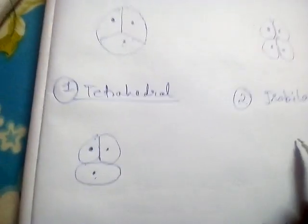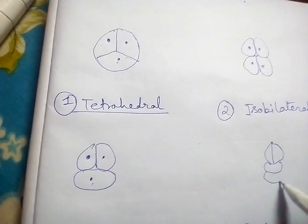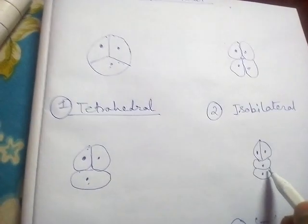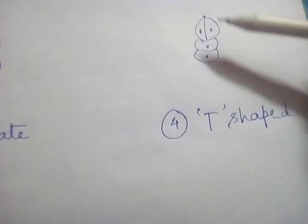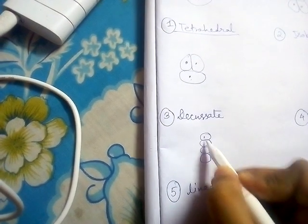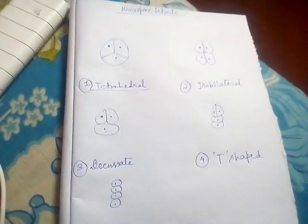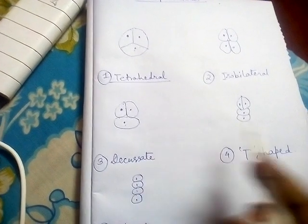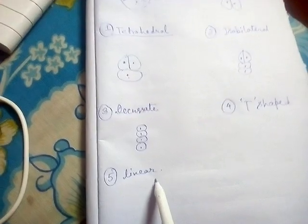The fourth type is T-shaped. In the case of the T-shaped tetrad, four microspores are arranged in a T configuration — first, second, third, and fourth. The fifth type is linear, where the four microspores are arranged in a straight line. So the five types of microspore tetrads are: tetrahedral, isobila teral, decasset, T-shaped, and linear.